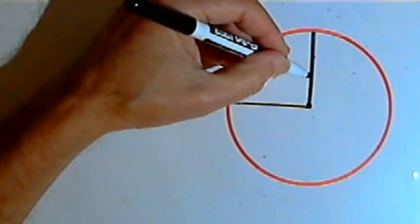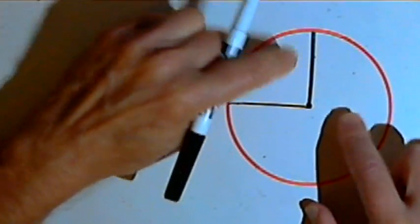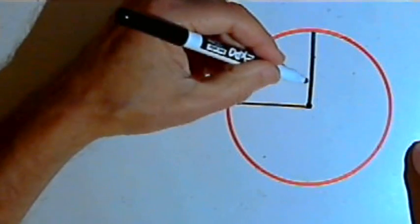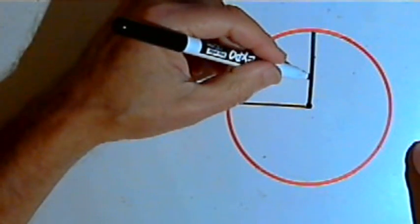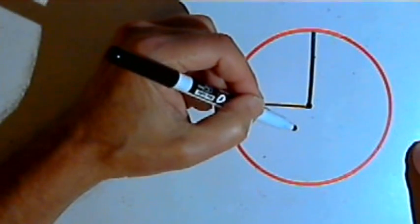And those two lines, those two radii, have divided the circle into two parts, this smaller wedge, which is a sector of the circle, and this larger portion, which is also a sector of the circle.